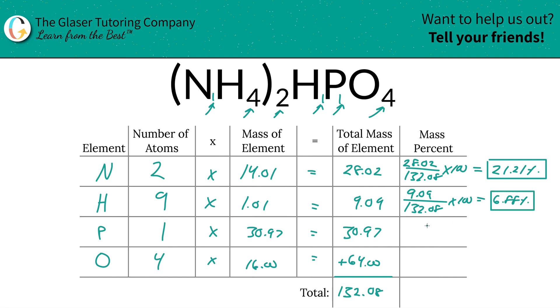Same thing now for phosphorus, right? You see how repetitive this gets? And that's actually a good thing. That means it's easy. Times 100, all right? 23.45% now.